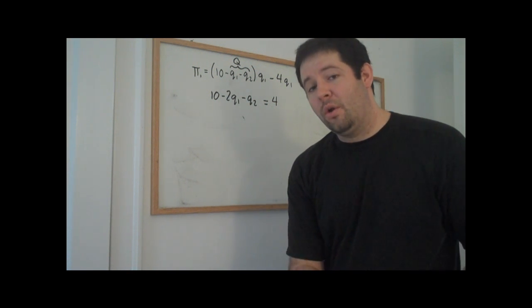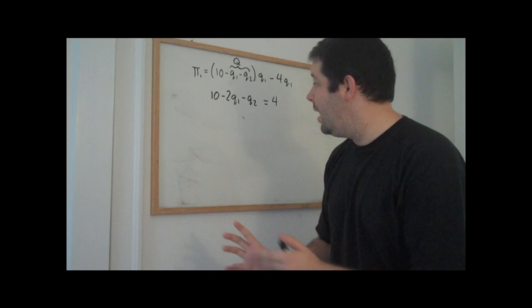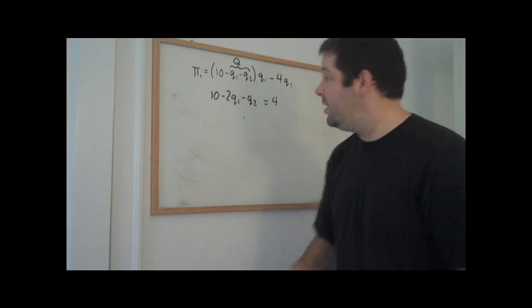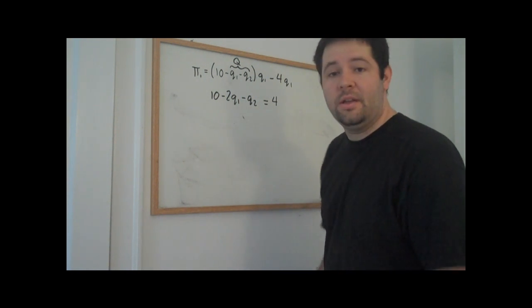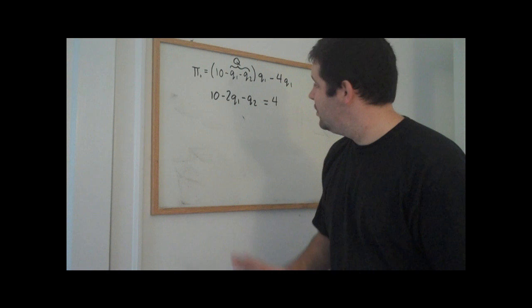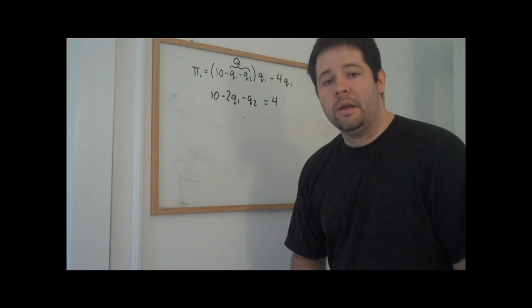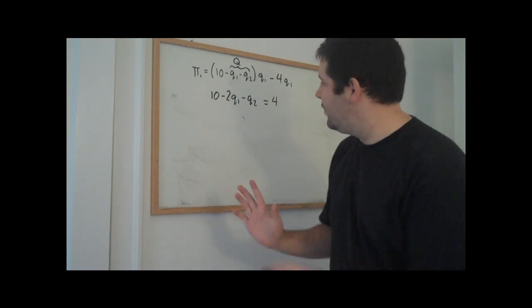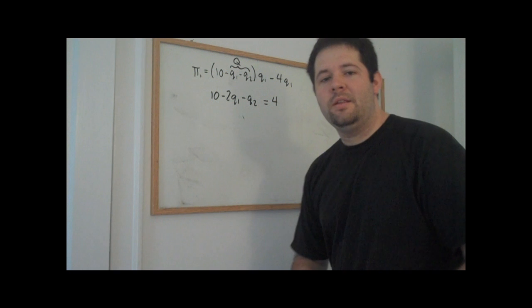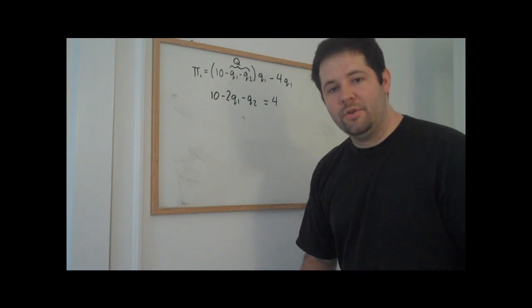What's different about Cournot competition from monopoly is that in Cournot competition, the marginal revenue depends on the other firm's quantity. What we need to do is then solve this for Q1, and what this will be called is a best response function. It's this firm's best response to what the other firm's quantity choice is.